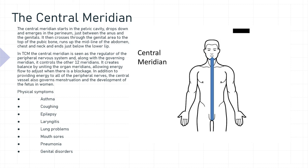In addition to providing energy to all of the peripheral nerves, the central vessel also governs menstruation and the development of the fetus in women. The physical symptoms associated with central meridian imbalance are asthma, coughing, epilepsy, laryngitis, lung problems, mouth sores, pneumonia, and genital disorders.